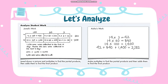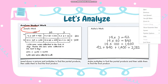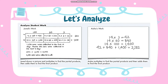Let's analyze this student's work. Look at Jared's method. Jared draws a picture and multiplies to find the partial products, then adds them to find the final product. The given is 163 multiplied by 14. So 163 is broken into 160 and 3, and 14 is broken into 4 and 10. So the first step, he simply multiplied 4 by 100.